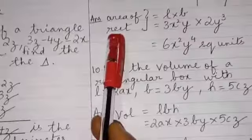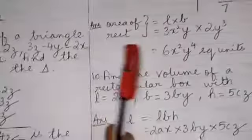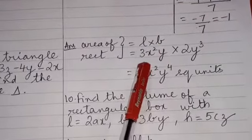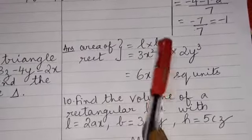Here we have to find the area of a rectangle given its length and breadth. We know that the formula to find the area of a rectangle is L into B, length multiplied by its breadth.